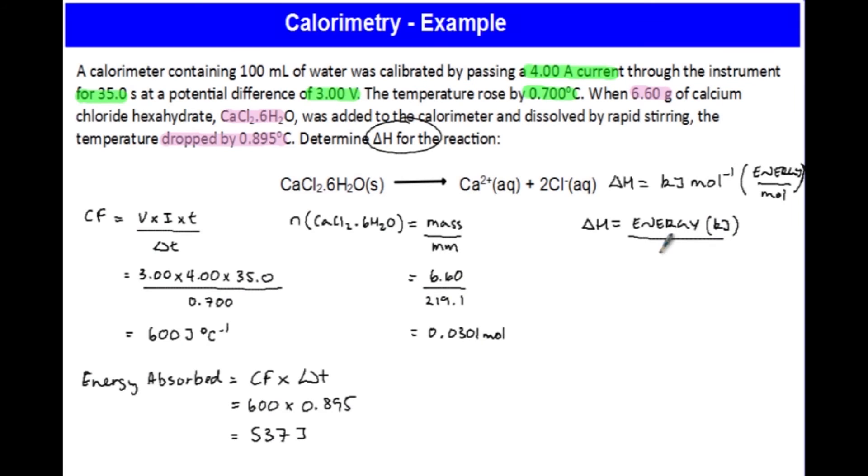537 joules equals, divide by 1000, 0.537 divided by the number of moles which in this case was 0.0301, and then we can work out the delta H. Now that gives us a value of 17.8 kilojoules per mole.